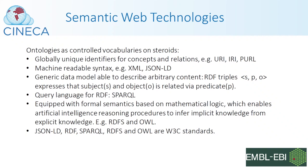RDF triples are typically stored in an RDF triple store. To query an RDF triple store, you can use the SPARQL query language. You can think of SPARQL as similar to what SQL is to relational databases — that's what SPARQL is to RDF triple stores. Also, ontologies are based on a formal semantics grounded in mathematical logic. The advantage of that is it allows you to make use of artificial intelligence reasoning procedures that can infer implicit knowledge from explicitly stated knowledge within the ontology.